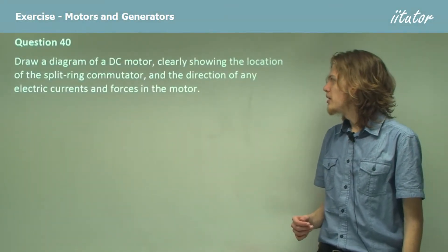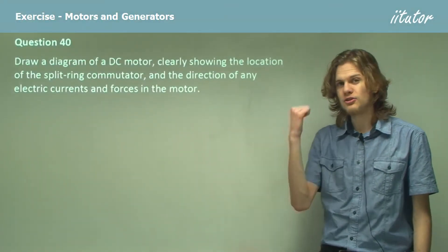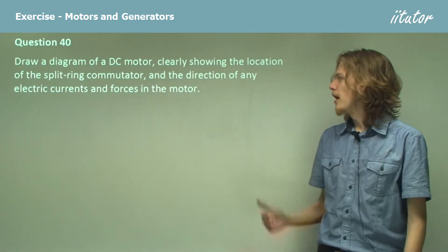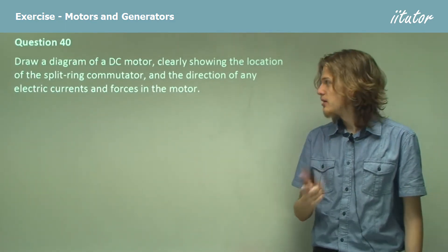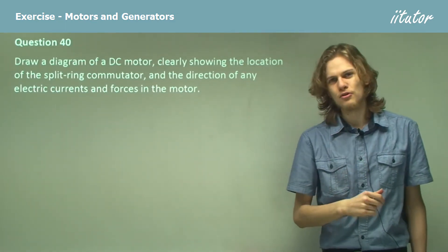Draw a diagram of a DC motor, clearly showing the location of the split ring commutator and the direction of any electric currents and forces in the motor.